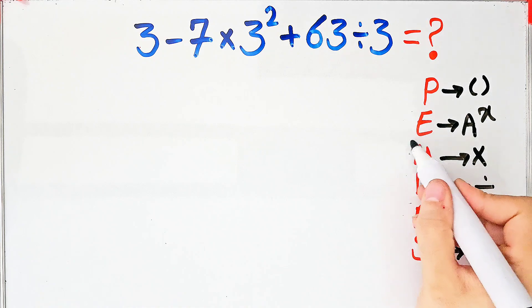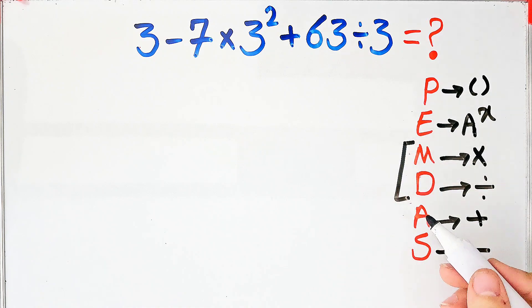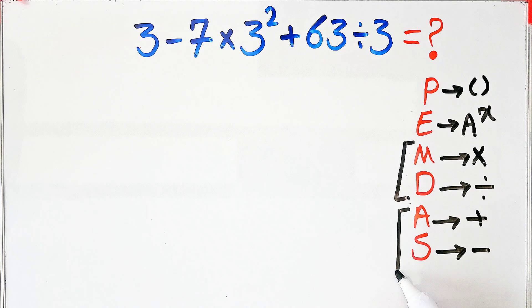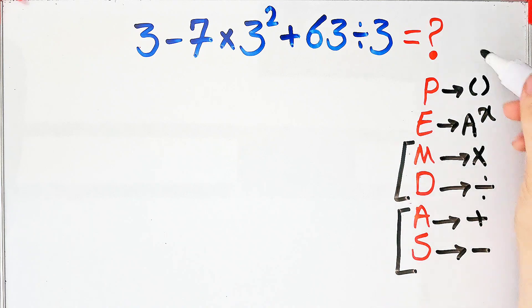Multiplication and division have the same level of priority. Addition and subtraction also have the same priority. When we have both in an expression, we start from the left and simplify the question.